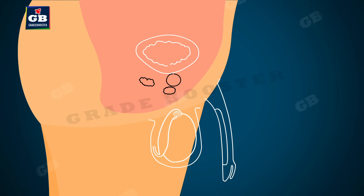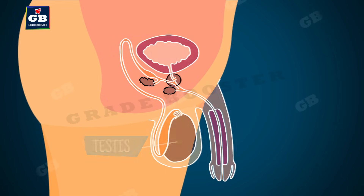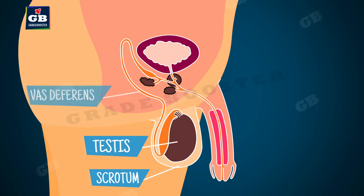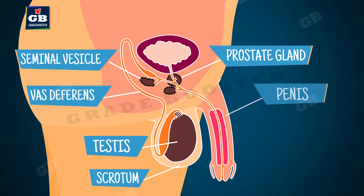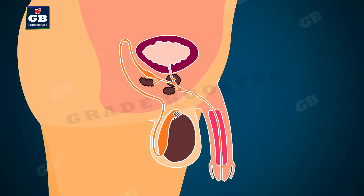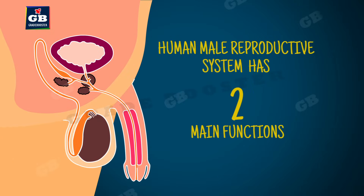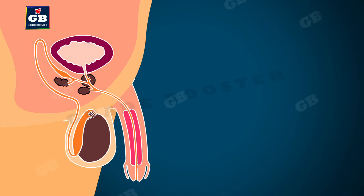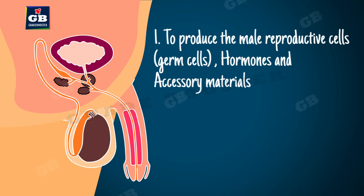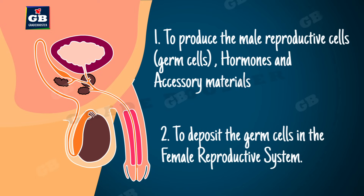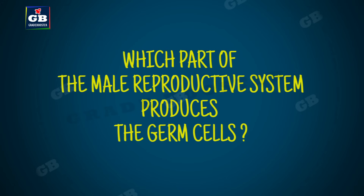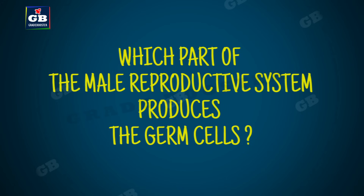The human male reproductive system is made up of different organs like testes, scrotum, vas deferens, seminal vesicles, prostate gland, penis, and urethra. It has two main functions: one, to produce the male reproductive cells, hormones, and accessory materials, and two, to deposit them in the female reproductive system.